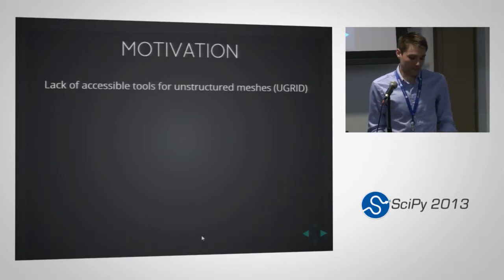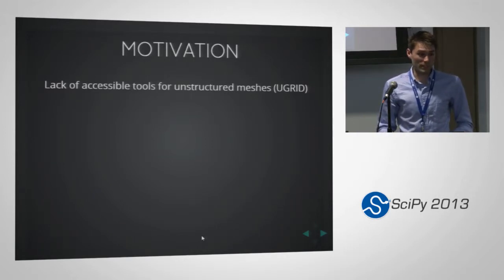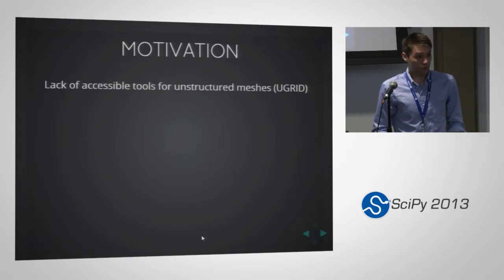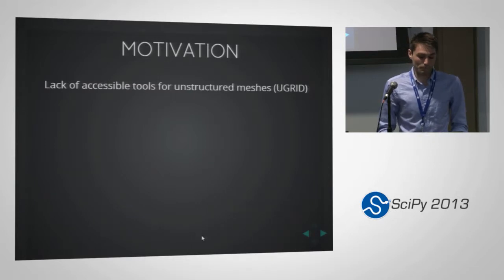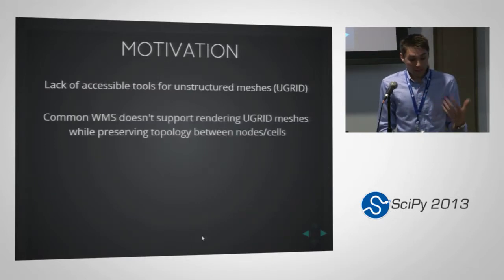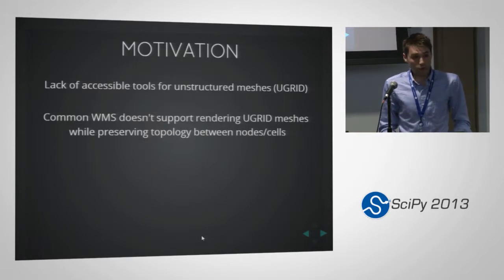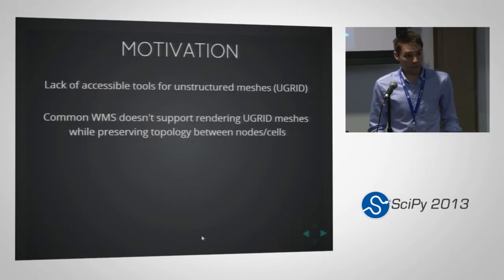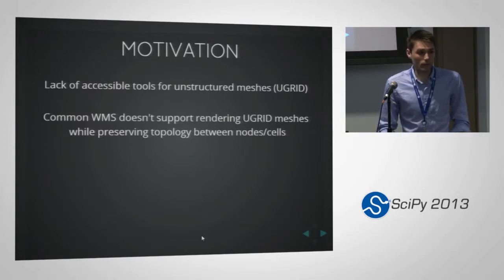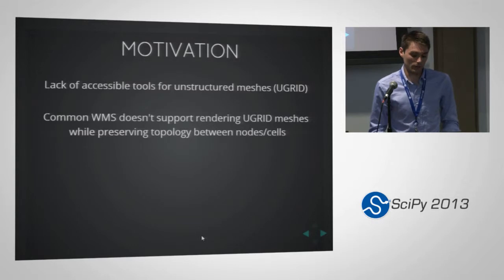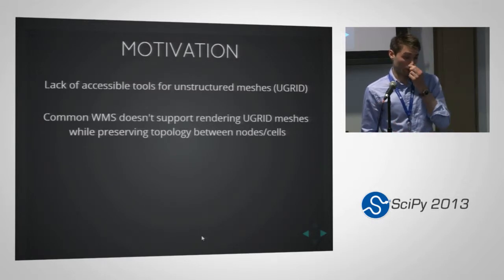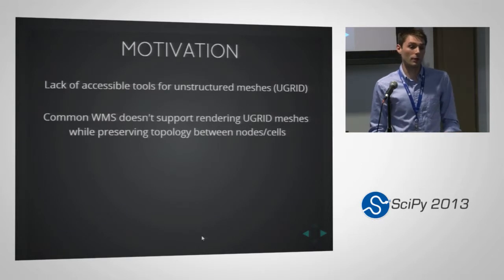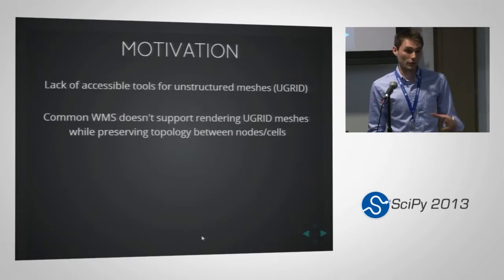The motivation for this project was a lack of easy-to-use, easy-to-get-up-to-speed-with tools for dealing generally with unstructured meshes like FVCOM and ADCIRC hydrodynamic models. Basic WMS technologies don't support rendering of unstructured meshes — they prefer data in a well-defined vector format or raster gridded representation. There really aren't any good web-accessible visualization tools that preserve the topology of data on nodes in a triangular mesh, or on cell faces or cell edges.